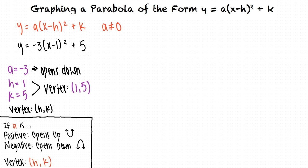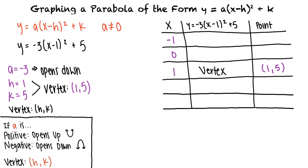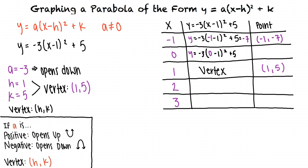Now we need to find two points on each side of the vertex. To the left of the vertex, we can solve for y when x equals negative 1 and 0. To the right of the vertex, we can solve for y when x equals 2 and 3. First, let's plug negative 1 in for x into our parabolic equation. This gives us y equals negative 3 times the quantity negative 1 minus 1 squared plus 5. When we simplify this, we see that y equals negative 7. This tells us the point negative 1 comma negative 7 lies on our parabola. Next, we can plug 0 in for x, which tells us that the point 0 comma 2 also lies on our parabola.